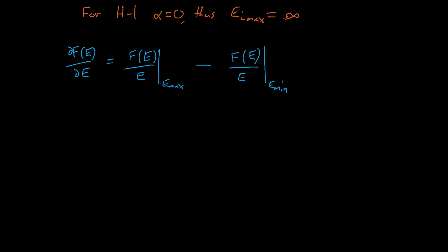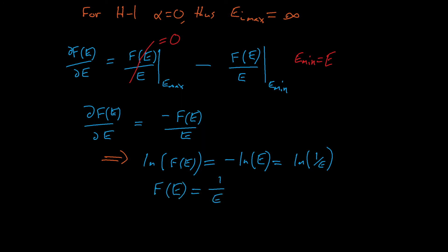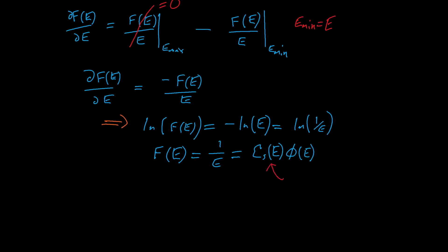For our second term, Emin is actually equal to the current energy of the particle, E, which means that our equation has become a differential equation that we can now solve. Taking the integral of this equation gives that the log of f is equal to the negative log of E, which is just the log of 1 over E. From here we can see that f is equal to 1 over E, which allows us to then solve for the neutron flux. Because our scattering cross-section is relatively constant for hydrogen, especially in the slowing down range, this means that our flux is simply equal to 1 over E in the slowing down range.